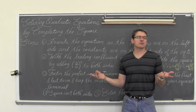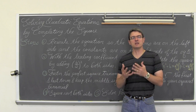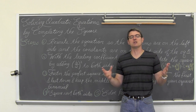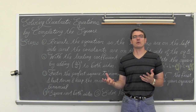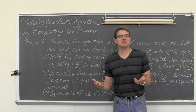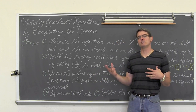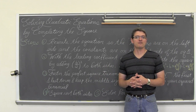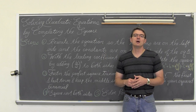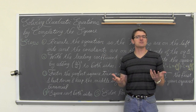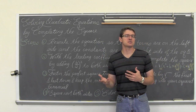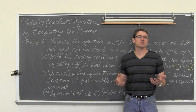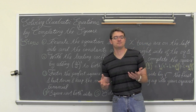The great thing about the quadratic formula is it will give us a solution to the quadratic equation regardless of what kind of value it is — a whole number answer, a rational answer, an irrational answer like the square root of seven, or it will let us know when there is no solution at all.